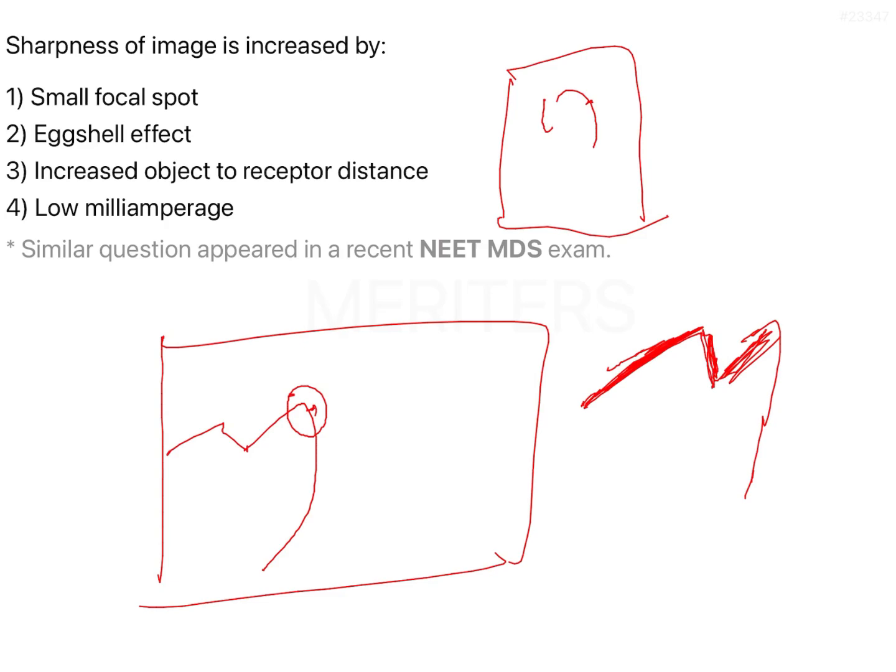This form of appearance is what is called an unsharp image because the resolution of the image has been damaged. In order to ensure that the sharpness of the image is increased, there are certain factors that we need to take into consideration.